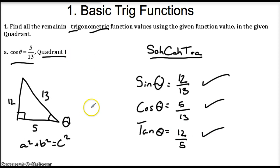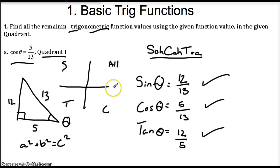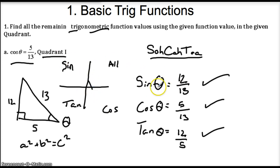Now, why does it tell us it's in quadrant 1? That goes back to an important concept: different trig functions are positive in different quadrants. Remember — all student teachers cry. In the first quadrant, all trig functions are positive. In the second, only sine is positive. In the third, only tangent is positive. And in the fourth, only cosine is positive. Since this is in quadrant 1, all of these are going to be positive and nothing has to be changed.